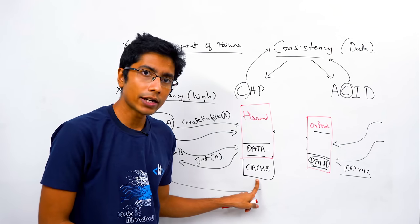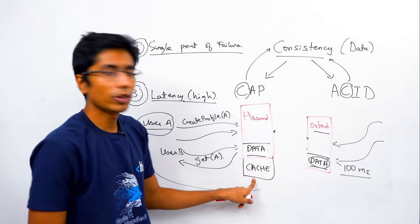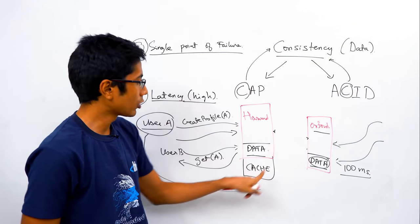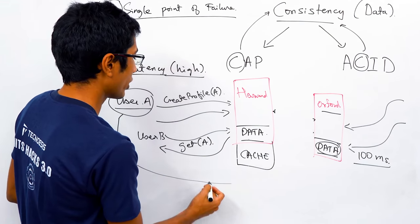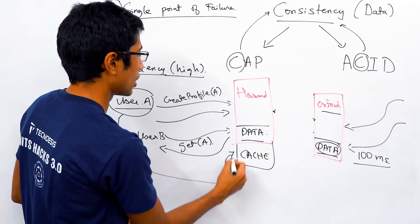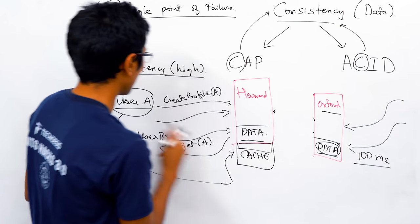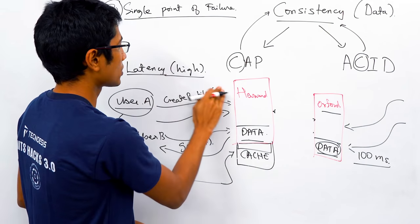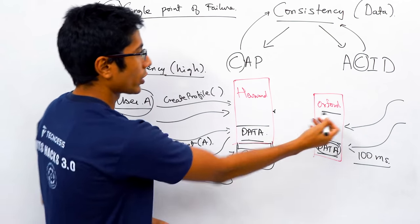Instead of connecting directly to the Oxford server, you actually talk to the Harvard server. The Harvard server checks its cache: does this profile exist? Assume it does not, and it belongs to the Oxford server. So you mention in the request 'get A from Oxford,' and the server sends a request to Oxford, which returns the profile.